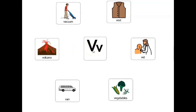Which word that starts with the letter v is a shirt without sleeves? Vest. Which word that starts with the letter v is something healthy you can eat? Vegetables.